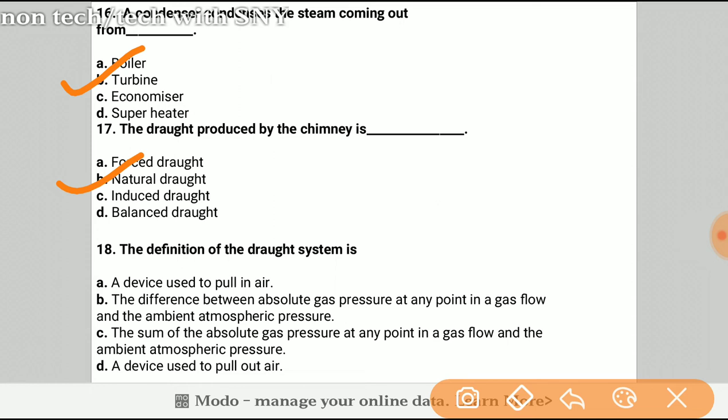Question number 18: The definition of the draft system is? The answer will be the difference between the absolute gas pressure at any point in a gas flow and the ambient atmospheric pressure.